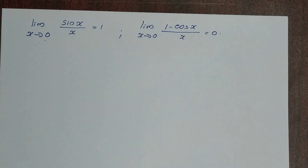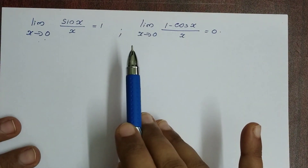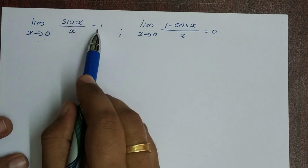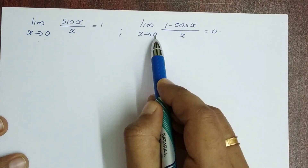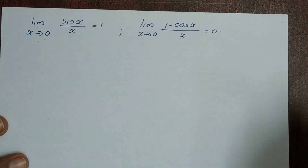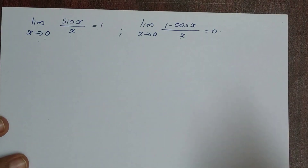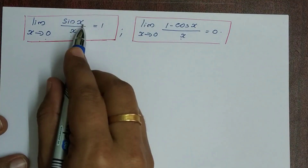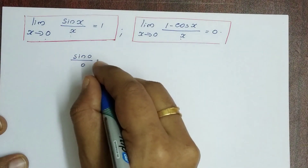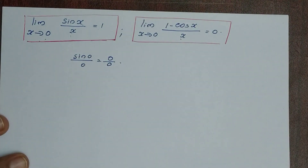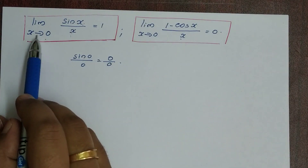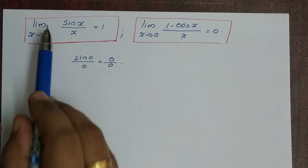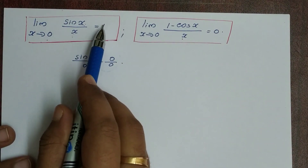Now we have two important results. The first result: limit x tends to 0, sin x divided by x is equal to 1. The second result: limit x tends to 0, 1 minus cos x divided by x is equal to 0.